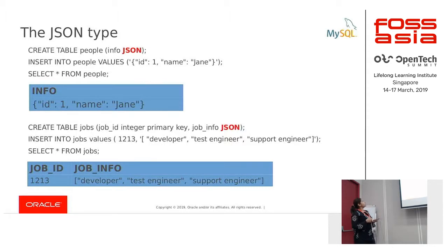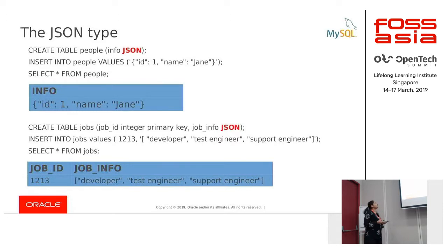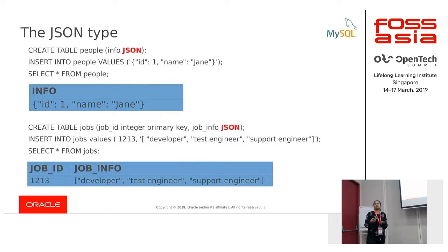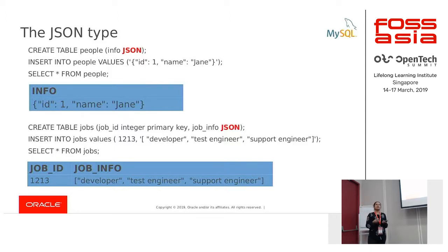Let's briefly look at the JSON data type. Why a separate data type? You can store JSON data in a text column, but MySQL has its own JSON data type which is stored internally as a binary block. What advantage do we get? The first is automatic validation of your JSON data — when you insert data, if the JSON is invalid it raises an error, so at insertion itself you know whether it's a valid JSON object or array. The second advantage is that since it is internally stored as a binary block, we have easy access to the keys and value members.